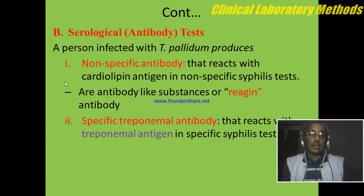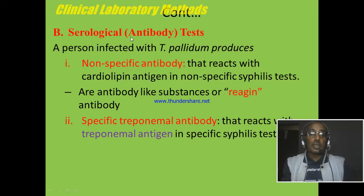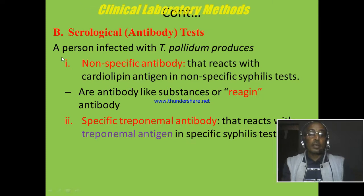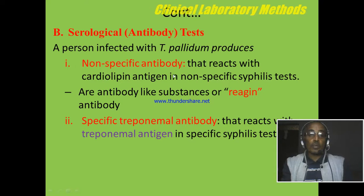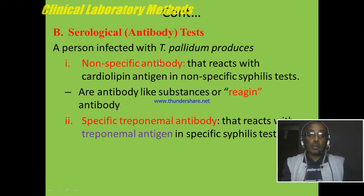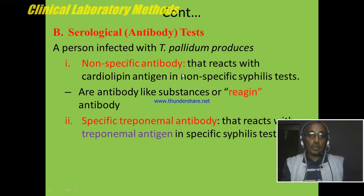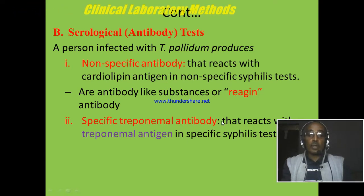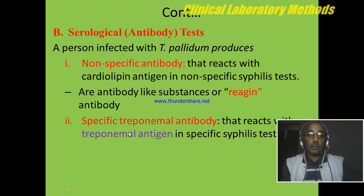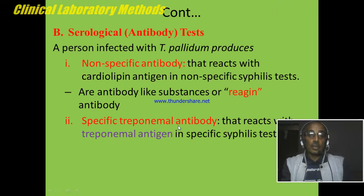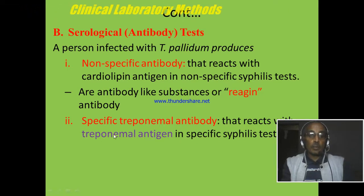When we come to the second method of syphilis diagnosis, it is serological technique or antibody testing. A person infected with Treponema pallidum produces two types of antibodies. The first one is nonspecific antibody — it is nonspecific because it can also be produced by other conditions like infectious and non-infectious diseases, and this antibody is known as reagin. The second one is a specific treponemal antibody, produced specifically after the entrance of Treponema pallidum into the host, and it binds the treponemal antigen specifically.